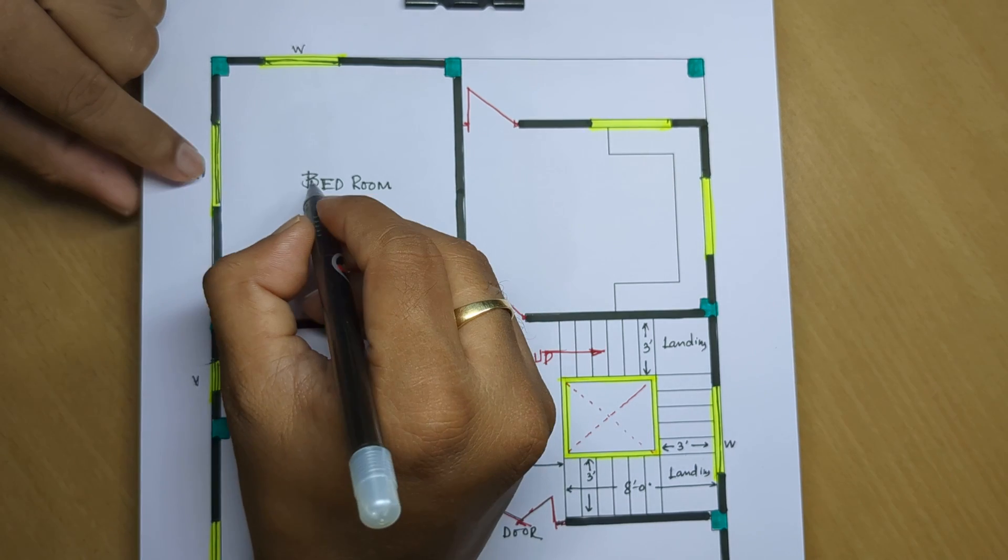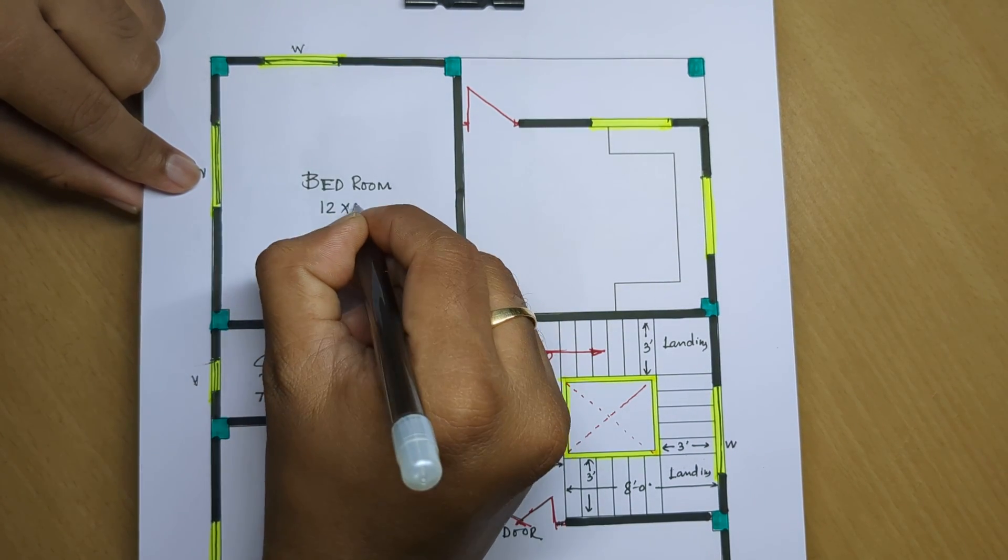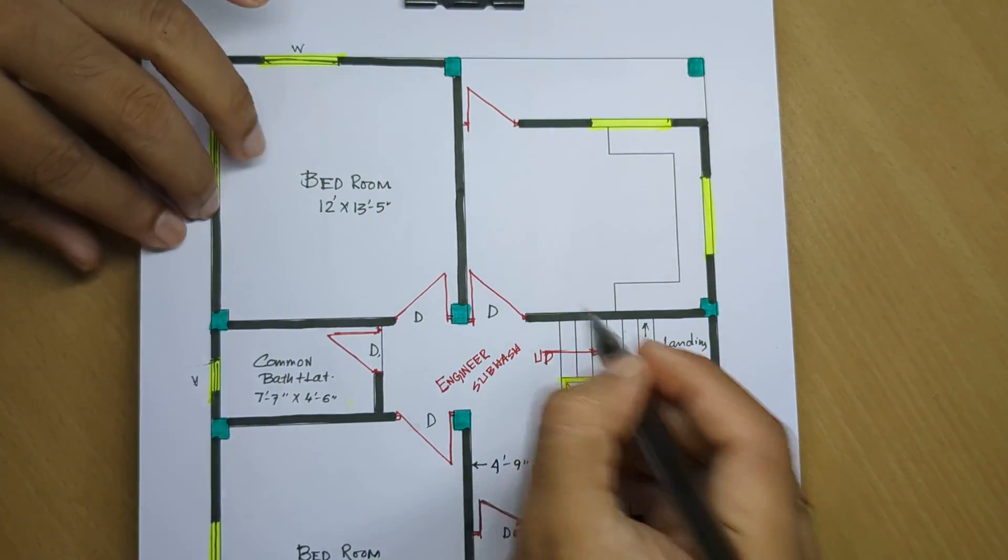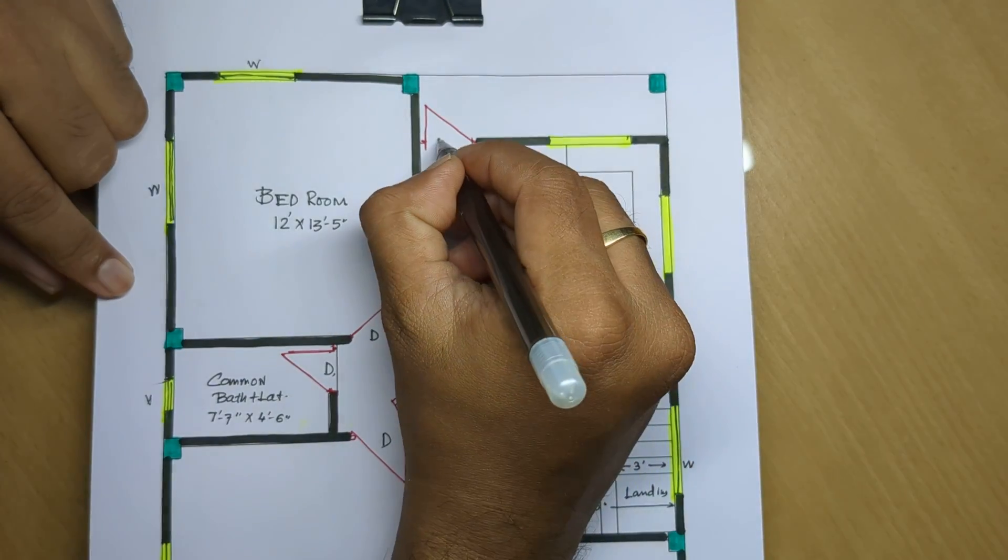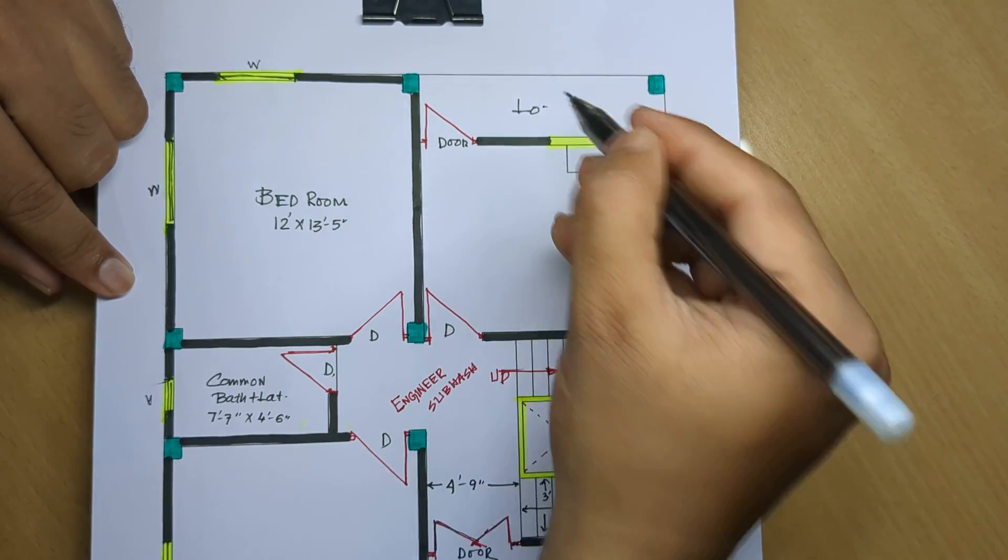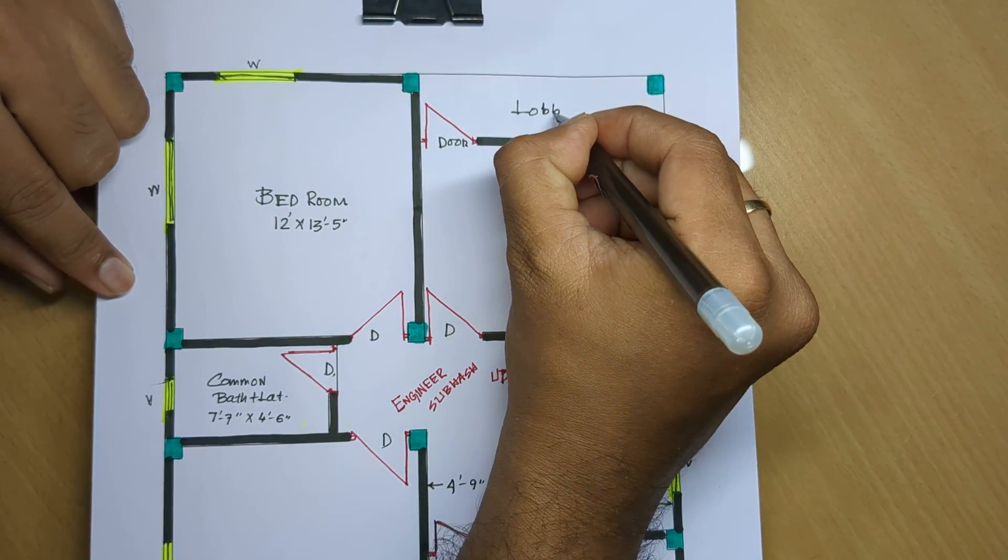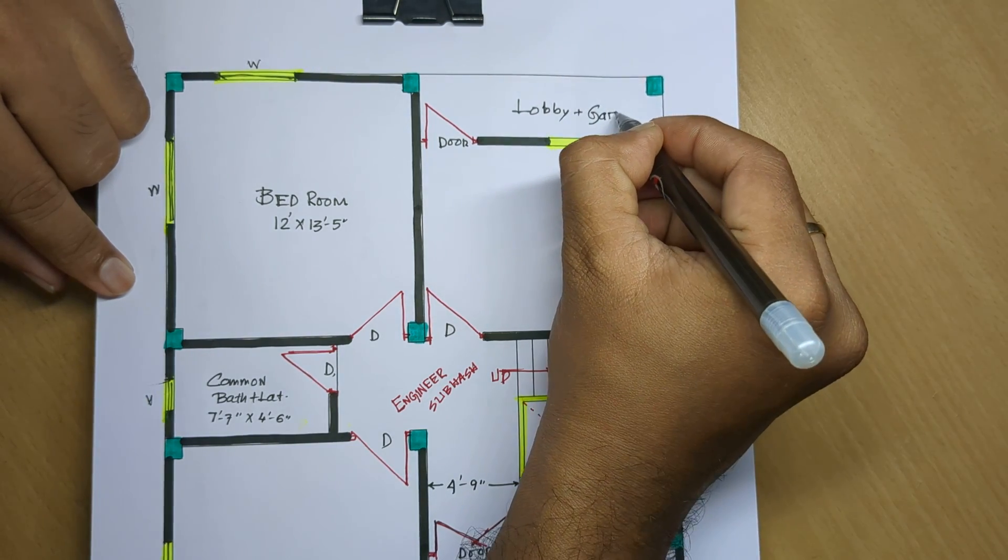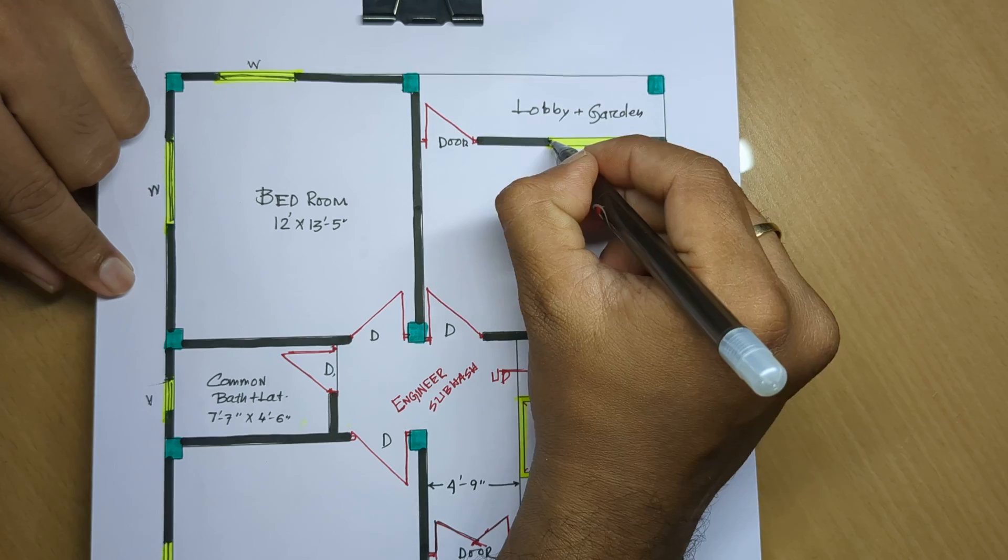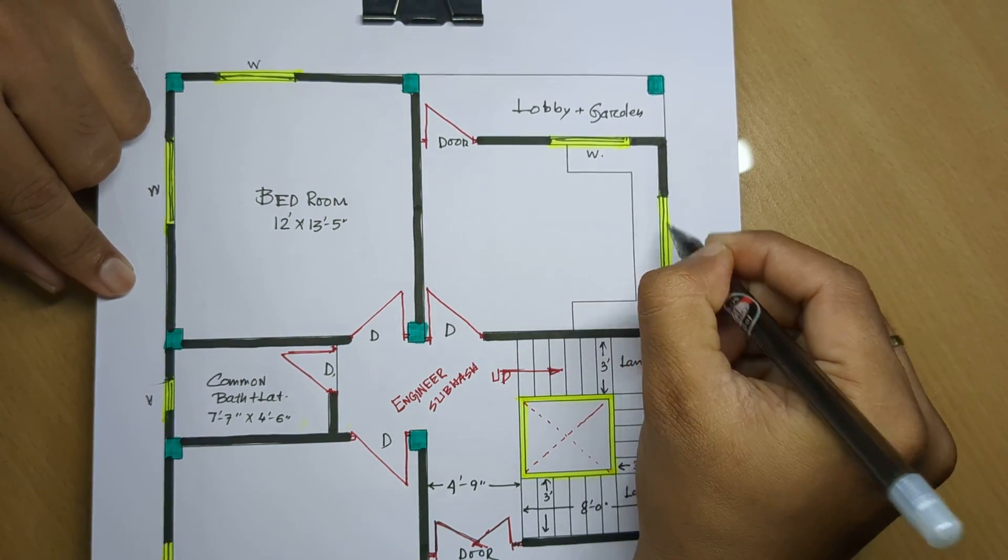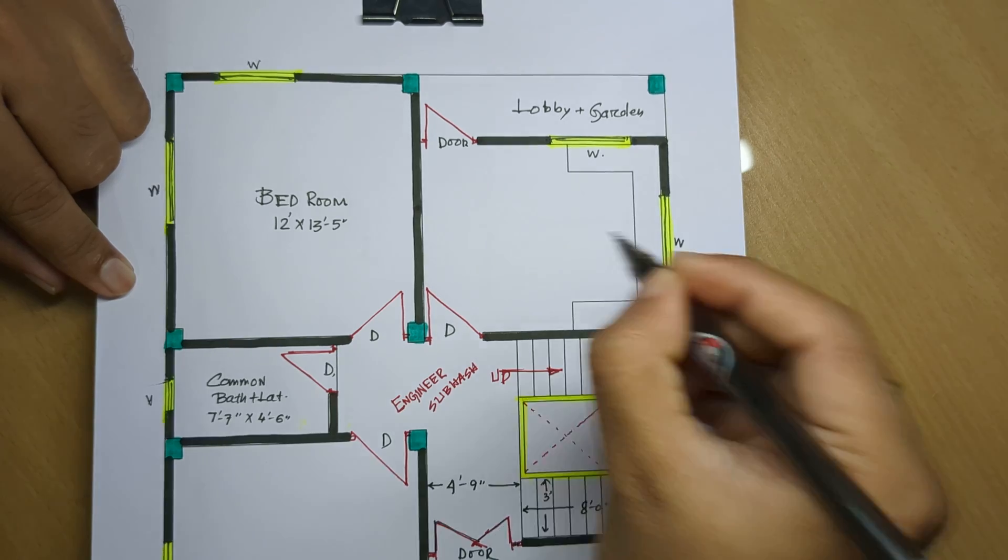Bedroom is 12 by 13 feet 5 inches standard size, with a door 12 by 4 feet. There's a garden area and window.